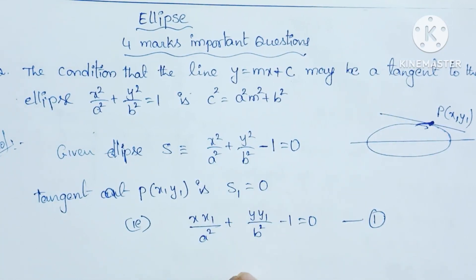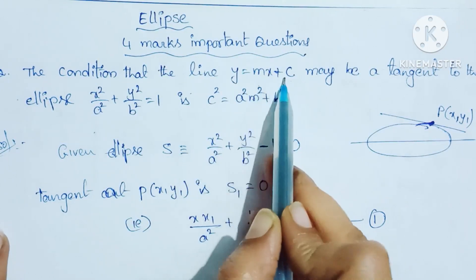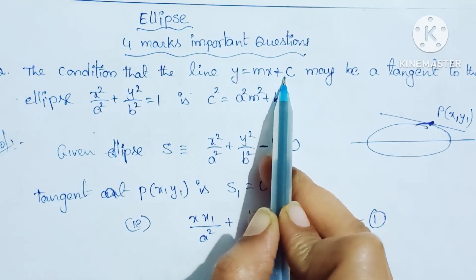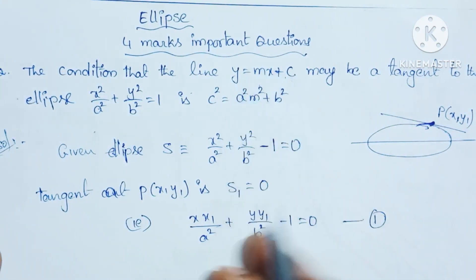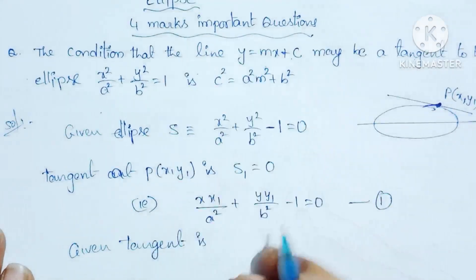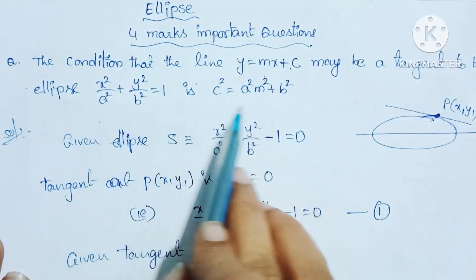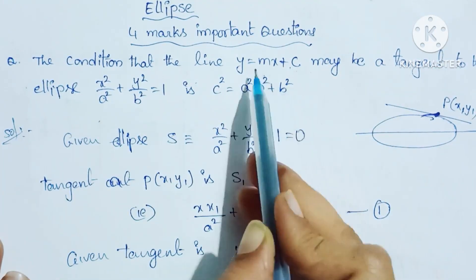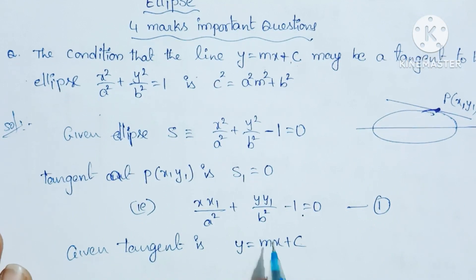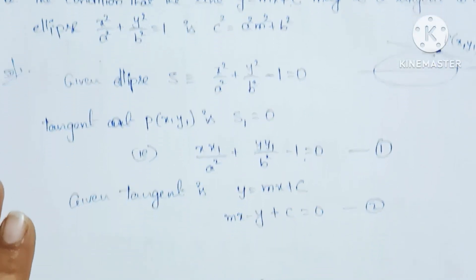This is the ellipse equation and the tangent equation S1. And the tangent line is y equal to mx plus c, which gives us mx minus y plus c equal to 0. This is the second equation. Equation 1 is the tangent equation, equation 2 is the tangent line. These are the same lines.